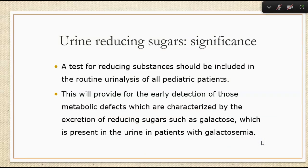When we look at urine reducing sugars, we're typically looking at early detection for metabolic defects — for example, excretion of reducing sugars like galactose, which we'd see in a patient with galactosemia. Now I'm going to finish up this lecture with urine ketones and then move into lecture two.